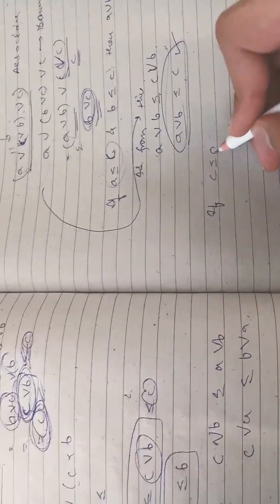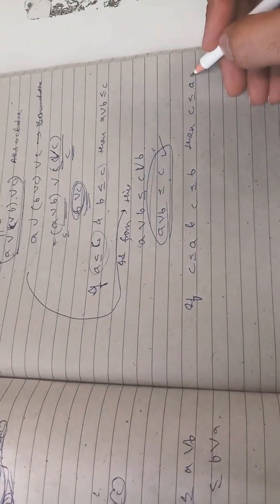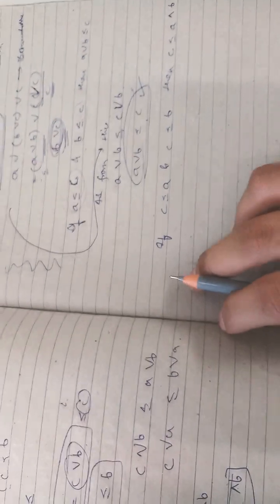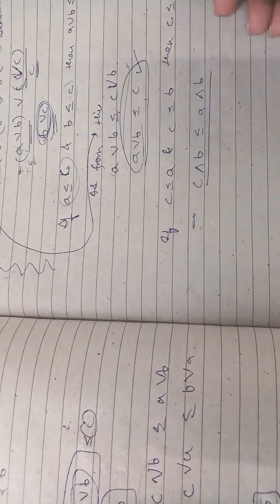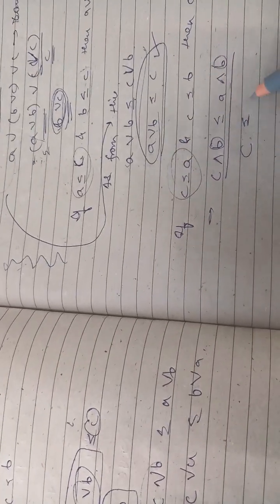If C is less than or equal to A and C is less than or equal to B, then C is less than or equal to A intersection B. We will prove this now. As C intersection B is less than or equal to A intersection B — using the second property — C intersection B is less than or equal to A intersection B, so this is the result.